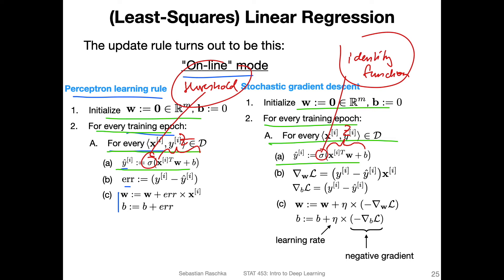Now, for the perceptron, we compute this error here by just subtracting the predicted value from the actual class label. In linear regression, we have continuous values, but it's very similar. Also here, we have a subtraction. For the weights, we multiply this by x, by the input feature vector. And for the bias unit, we don't.